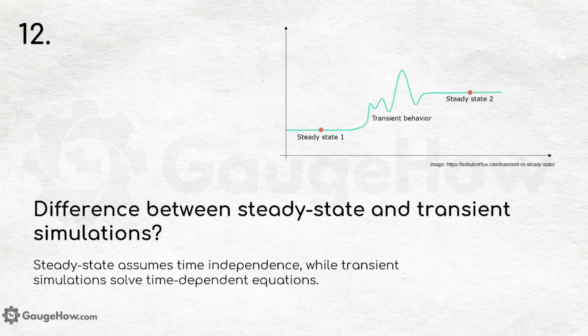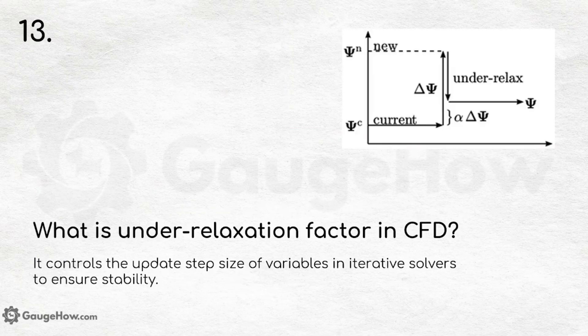What is the difference between steady state and transient simulations? Steady state assumes time independence while transient simulations solve time-dependent equations. Remember the difference and don't get confused.